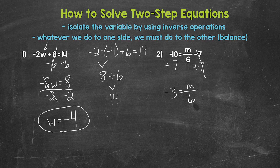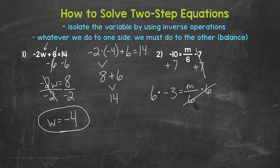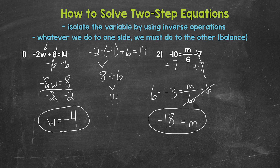Now we have m divided by 6 equals negative 3. We are dividing m by 6, so the inverse operation is multiplication. Let's multiply that side of the equation by 6. Whatever we do to one side, we must do to the other, so multiply the left side by 6 as well. On the right side, dividing by 6 and multiplying by 6 cancel each other out, so m is isolated. We have m equals 6 times negative 3 — a positive times a negative gives us a negative — so 6 times negative 3 gives us negative 18. So m equals negative 18, and that's our solution.